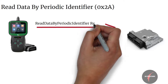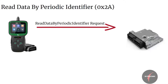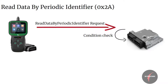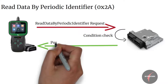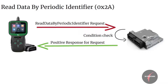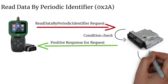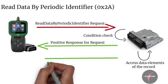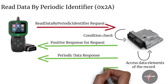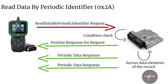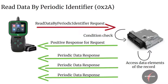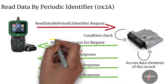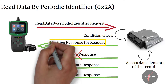Upon receiving a Read Data by Periodic Identifier request other than a stop sending request, the server shall check whether the conditions are correct to execute the service. If the conditions are correct, the server shall transmit a positive response message including the service identifier, following which the server shall access the data elements of the records specified by the periodic data identifier parameter and transmit their values in separate periodic data response messages for each periodic data identifier containing the associated data record parameters. The server shall never transmit a negative response message once it has accepted the initial request message by responding positively.